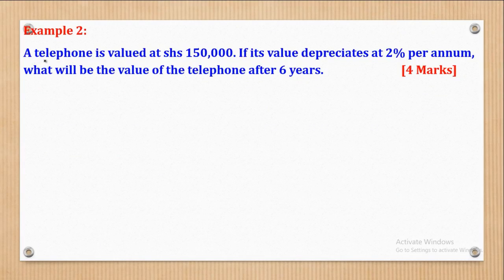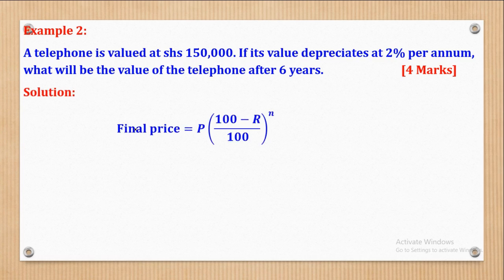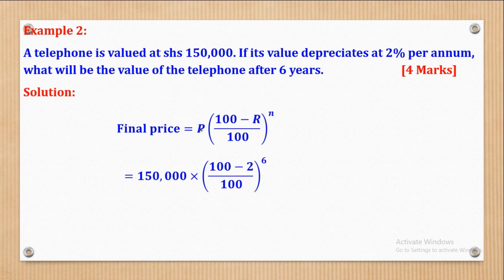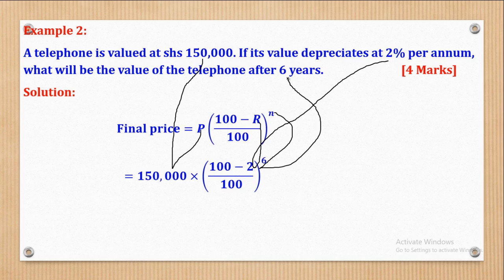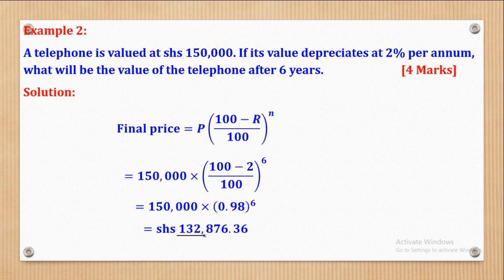Example 2: A telephone is valued at shillings 150,000. If its value depreciates at 2% per annum, what will be the value of the telephone after 6 years? Because it is depreciation, there is a minus. Substituting: P is 150,000, R is 2, and N is 6. Simplifying the bracket gives 0.98, and simplifying everything gives shillings 132,872.36.